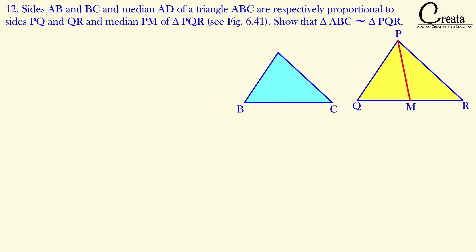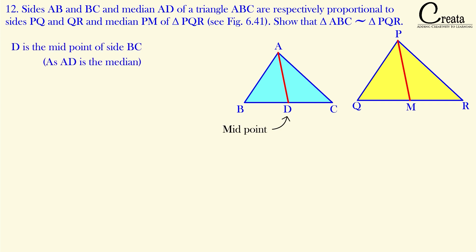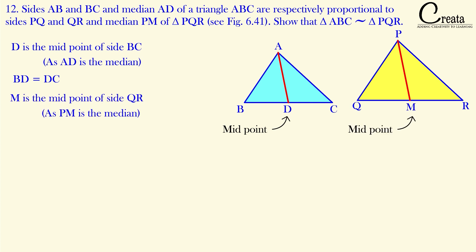What is a median? A median is a line segment that starts from the vertex of a triangle and joins the midpoint of the opposite side. Here the first median starts from vertex A and joins point D, which is the midpoint of side BC. D is the midpoint, meaning it divides BC into two equal parts — BD and DC are equal to each other. Similarly, in triangle PQR, the median PM means M is the midpoint of side QR, dividing QR into two equal parts, so QM equals MR.